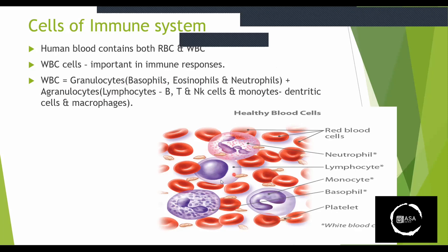The agranulocytes include lymphocytes and monocytes. Lymphocytes include B lymphocytes, T lymphocytes, and natural killer cells. Monocytes include dendritic cells and macrophages.